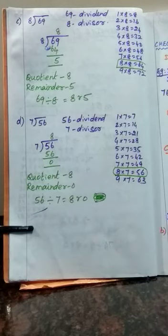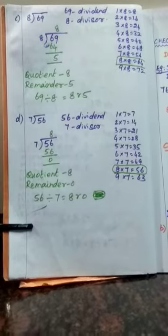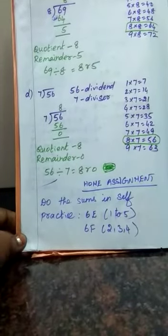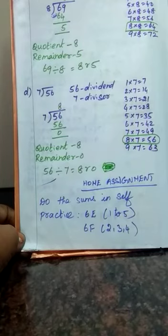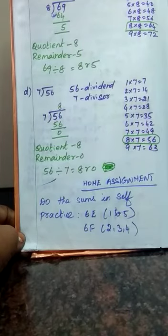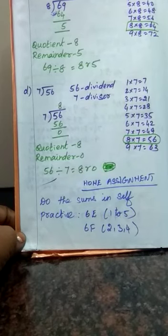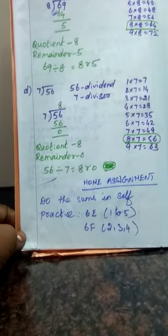I hope you all understand. This is the method of doing division. Today's home assignment: do the sums in self-practice 6E — sums 1, 2, and 5 — and 6F — sums 2, 3, and 4. Thank you children. Thank you all.